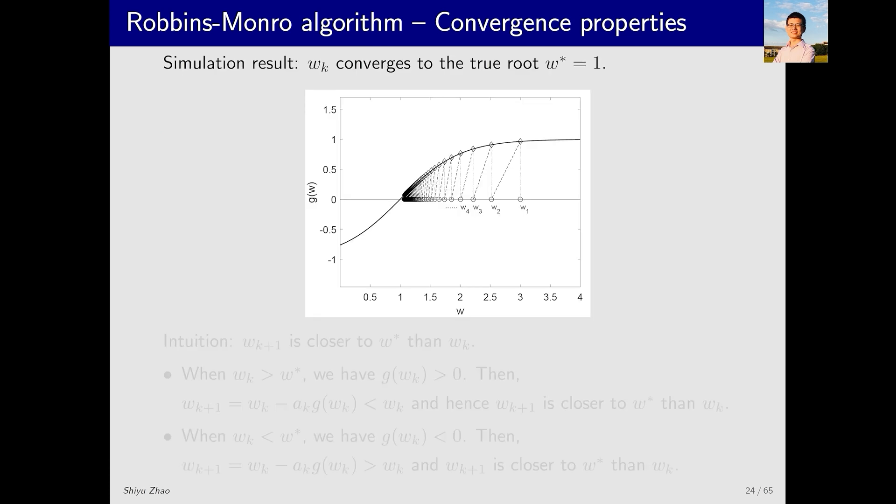Let's look at the results in this figure. You can see that at w1, we calculate g(w1). The height of this point, when multiplied by a number, equals this segment. Then g(w1) minus this segment jumps to w2. Calculating g(w2) again and multiplying by a number gives the next segment. Then g(w2) minus this segment jumps to w3, and so on until we reach w*.